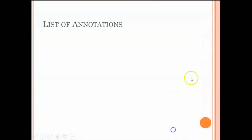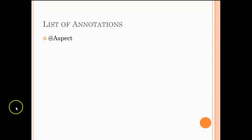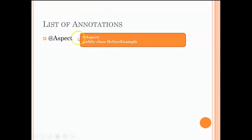So those are some of the differences between Spring AOP and AspectJ. Going further, let us talk about the various annotations we have for AspectJ. The first one is @Aspect — this annotation basically helps you notify Spring that this particular class is your aspect. If you see the code implementation, you will have a class like the BeforeExample we had in our previous video, and on top of that you use the @Aspect annotation.